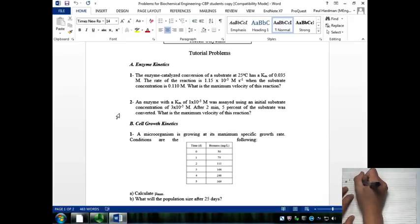Km, the Michaelis-Menten constant. The volumetric rate of reaction, 1.15 times 10 to the minus 3. And the initial substrate concentration, CS, which is 0.110 molar.